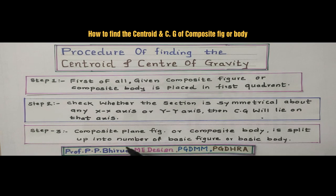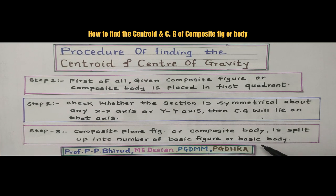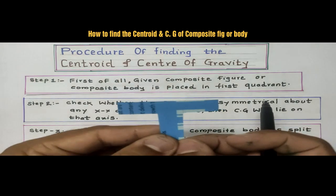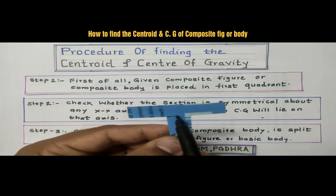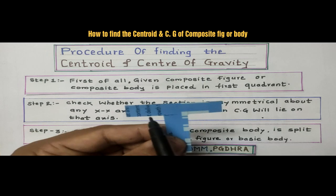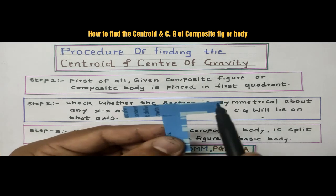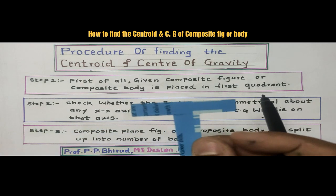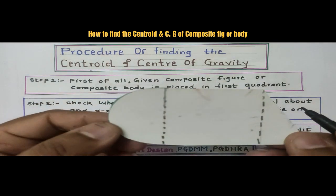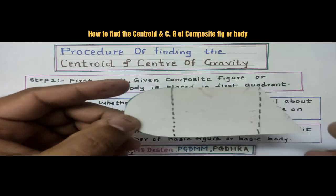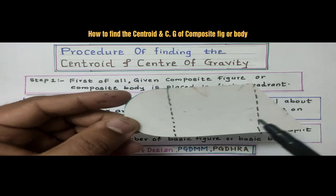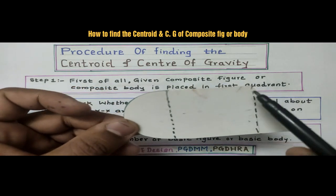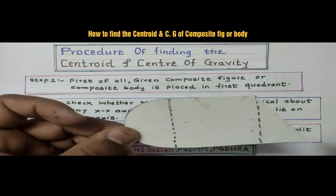Now, the third step: the composite plane figure or composite body is split into a number of basic figures or basic bodies. So, in the T-section, we can divide it into two parts — two rectangles, one and two. If we have such a type of composite figure, then we can divide it into three parts: semi-circle, square, and triangle.